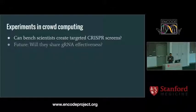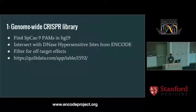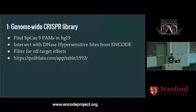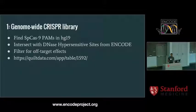We wanted to see if bench scientists could create their own targeted CRISPR screens, and I want to talk about how we used ENCODE data to develop custom guide RNA design libraries for people at the National Cancer Institute and beyond. First, we created a genome-wide CRISPR library. There are libraries from Moffitt Lab, Zhang Lab, and Doudna Lab, but how do you know which one to use? And if you want to target epigenomic elements, you're out of luck with any of those libraries. So we found NGGs or SP Cas9 PAM sites throughout all of HG19, intersected those with DNase hypersensitive sites from ENCODE, and used Bowtie2 to filter for off-target effects — producing a genome-wide intergenic guide RNA library. As far as we know, it's the first publicly available library of its kind, and it's available on QuiltData today.